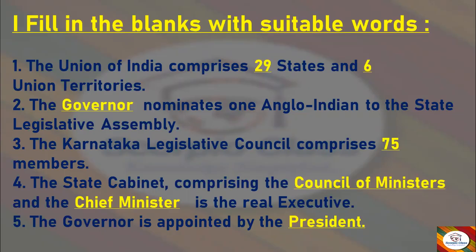The Karnataka legislative council comprises 75 members. The state cabinet comprising the council of ministers and the chief minister is the real executive. The governor is appointed by the president.